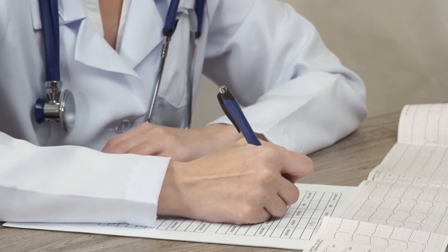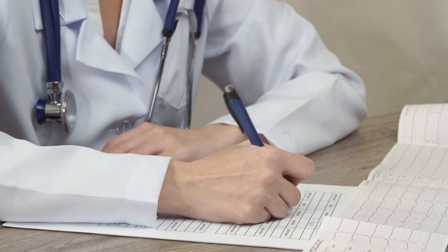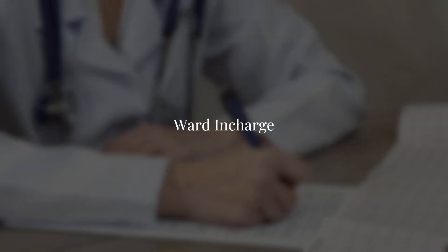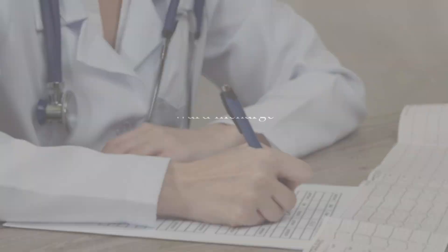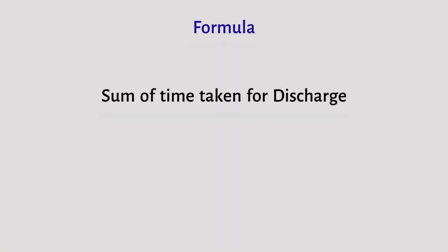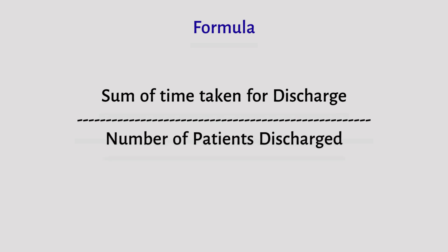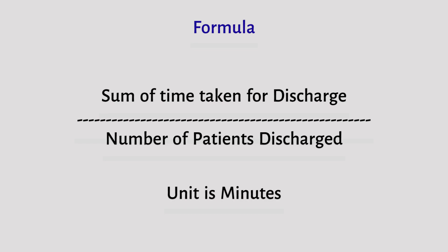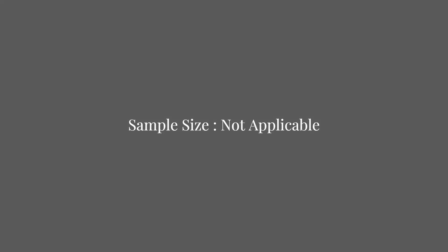Indicator monitored by a responsible person: ward in charge. The formula is — Numerator: sum of time taken for discharge. Denominator: number of patients discharged. Unit is minutes. Sample size: not applicable.